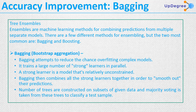To understand ensembles, consider an orchestra — so many instruments are played together. Can you listen to the violin separately? Can you listen to the piano's contribution separately? No. What you get is the total ultimate effect, and that is known as the ensemble. Ensembles are machine learning methods for combining predictions from multiple separate models.